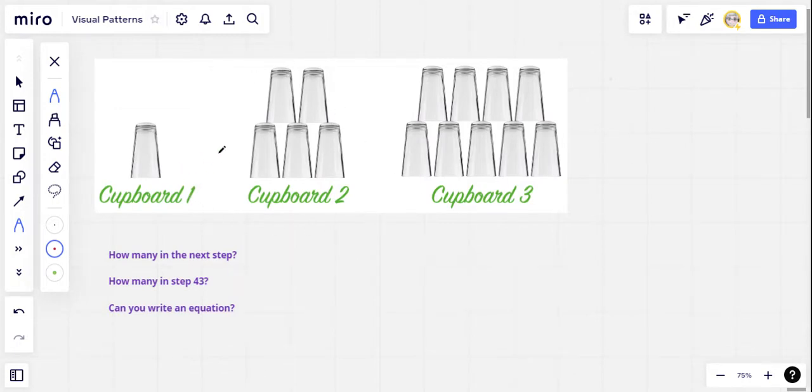So your challenge, first of all, is to figure out how many glasses there are in cupboard number four and then if you can, how many would be in cupboard number 43? And if along the way you can come up with an equation that you could use to figure out the number of glasses in any cupboard at all. So that's the challenge. If you'd like to accept it, pause the video, work it out, and see how you do.